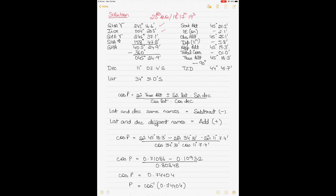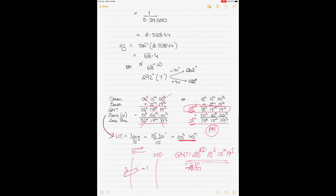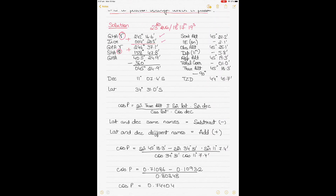You always add the increment to the GHA Aries, and that makes it 246°37.1'. Then you add the SHA obtained for the star Spica — you always add SHA. When you add the SHA to the GHA Aries, the value goes up to 405°24.9'. Whenever it is more than 360, you subtract 360, and that gives you your GHA star: 045°24.9'.